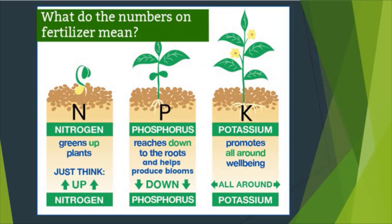There are four nutrients you need to learn about — these are essential for plant growth and a good overall state of the plant. The important nutrients are nitrogen, phosphorus, potassium, and magnesium.